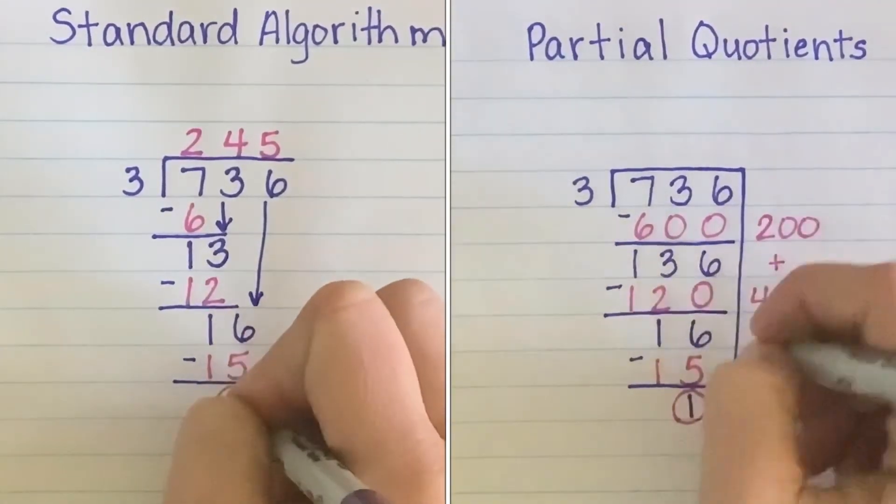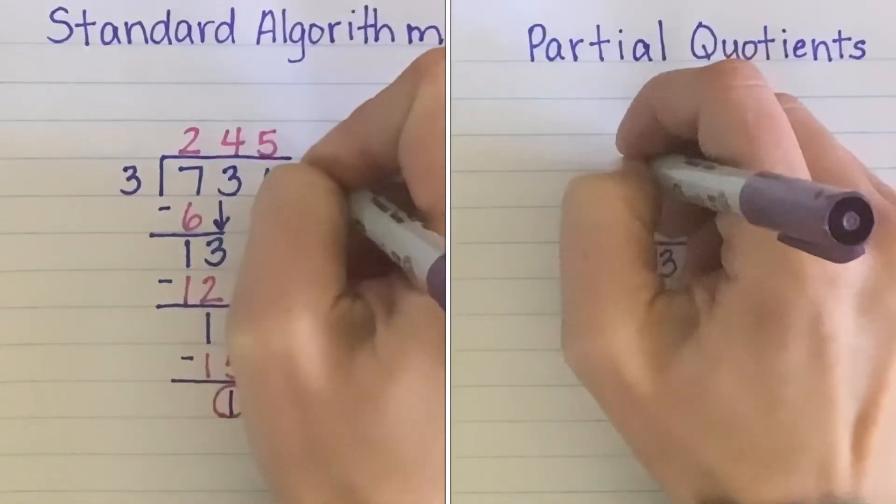Both methods leave us with a remainder of 1 and a total quotient of 245.